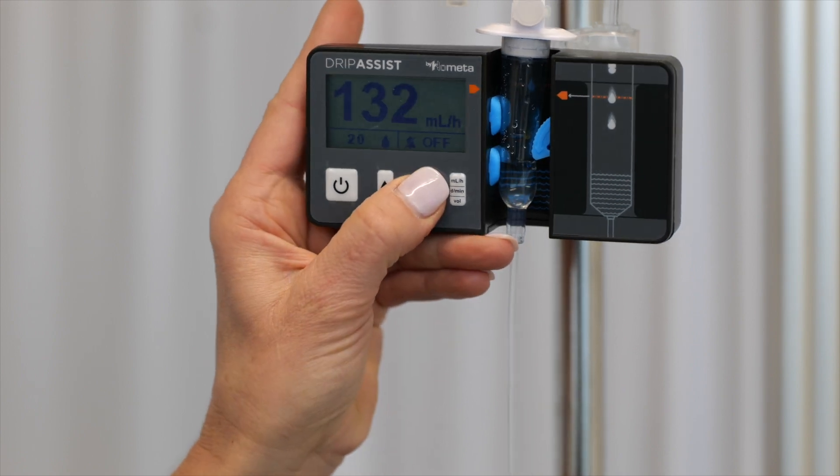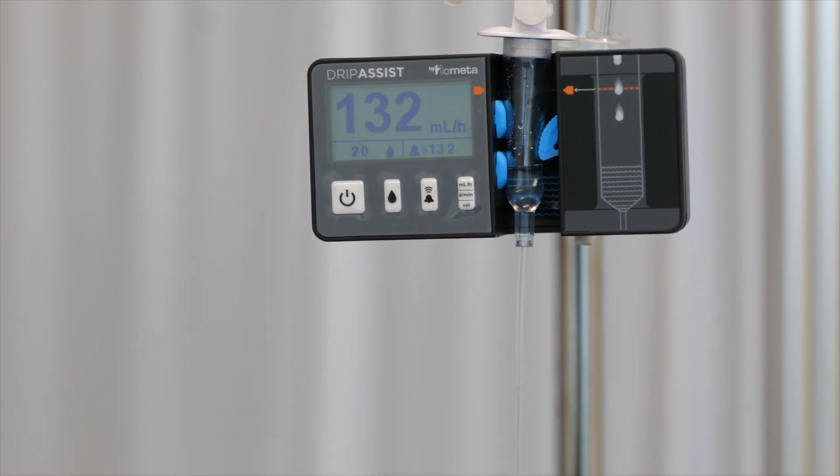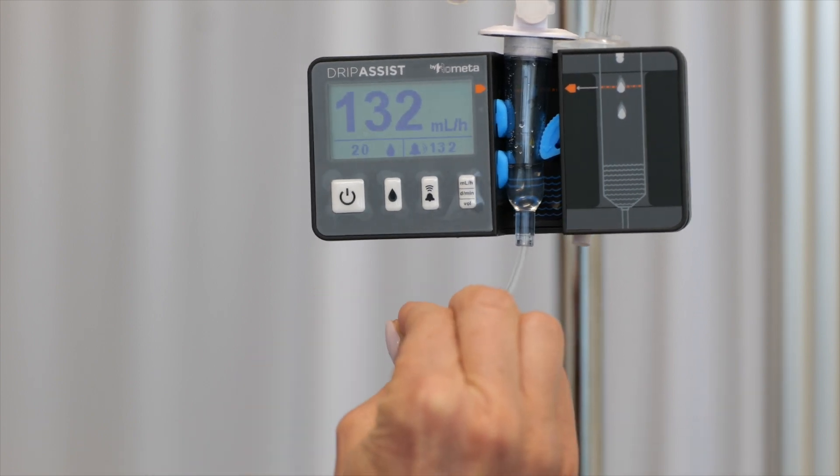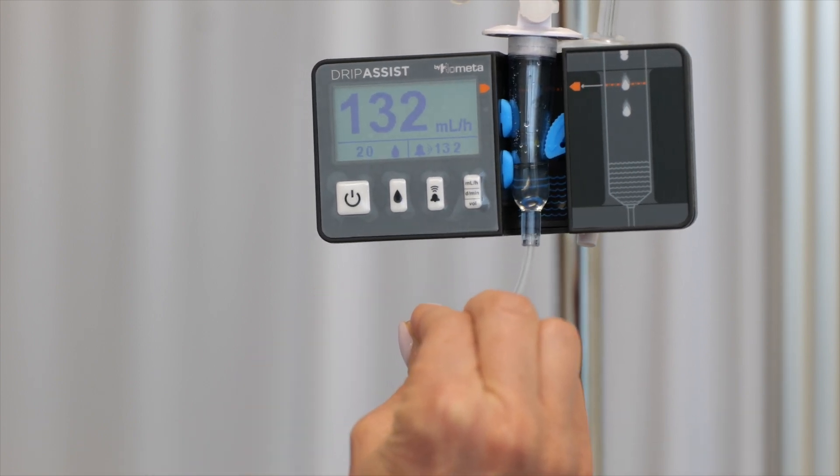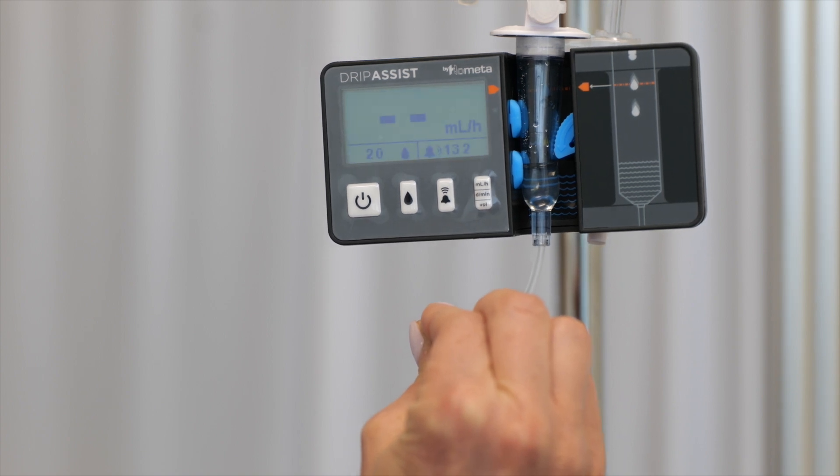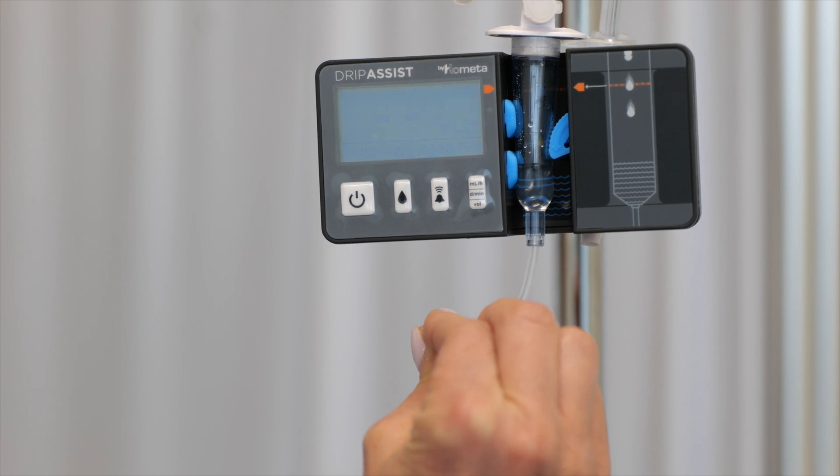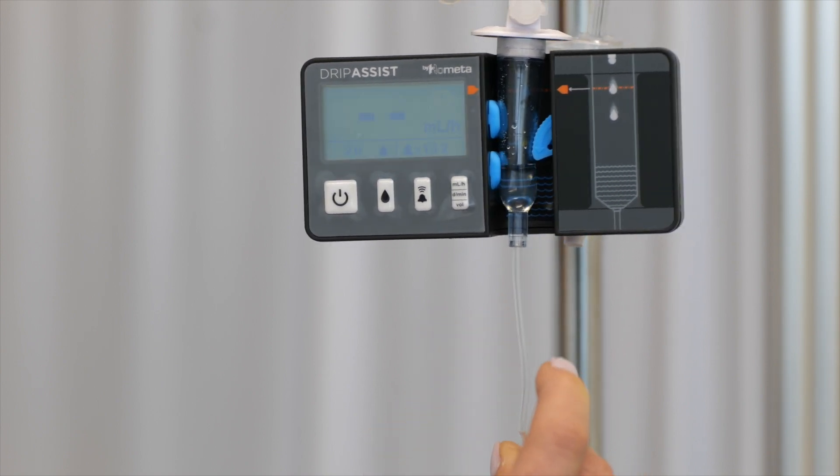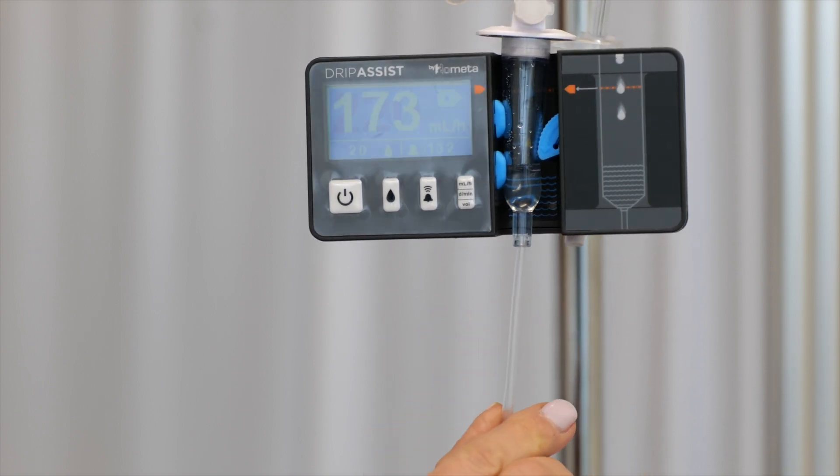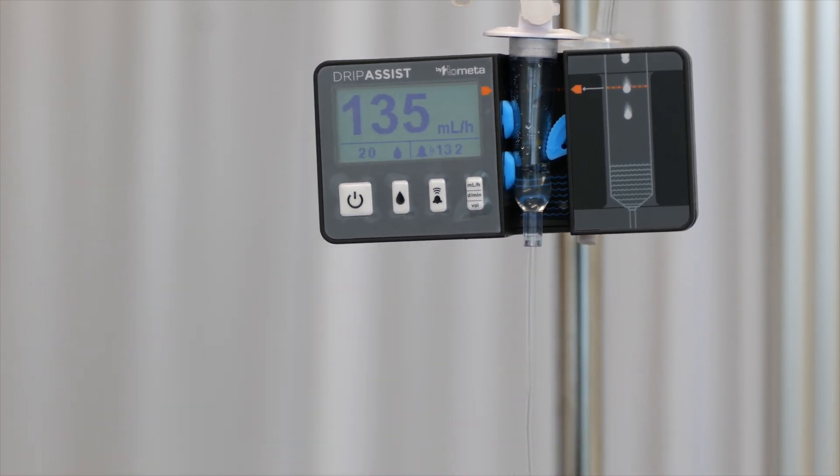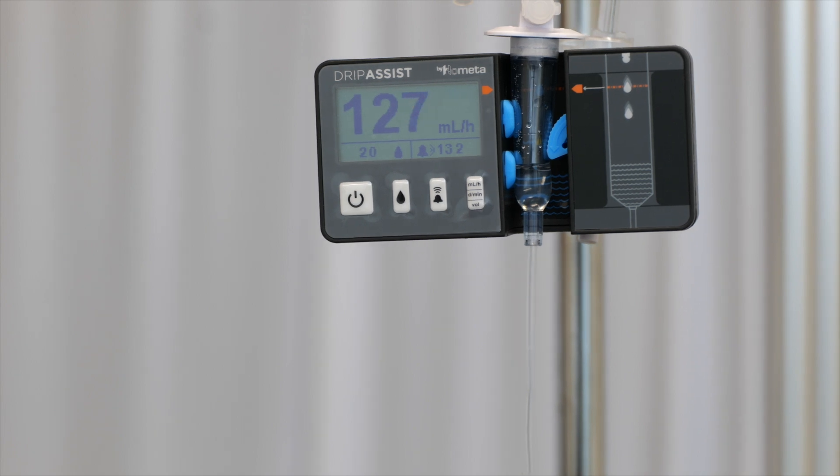Once the device has settled at your desired rate, you can press the alert button. The rate at which you've set your alert will be displayed in the bottom right-hand corner of the screen. If the rate deviates above or below 13% of the rate that you've set it at, the alert will sound. The alert will stop sounding if and when the rate comes back into range.